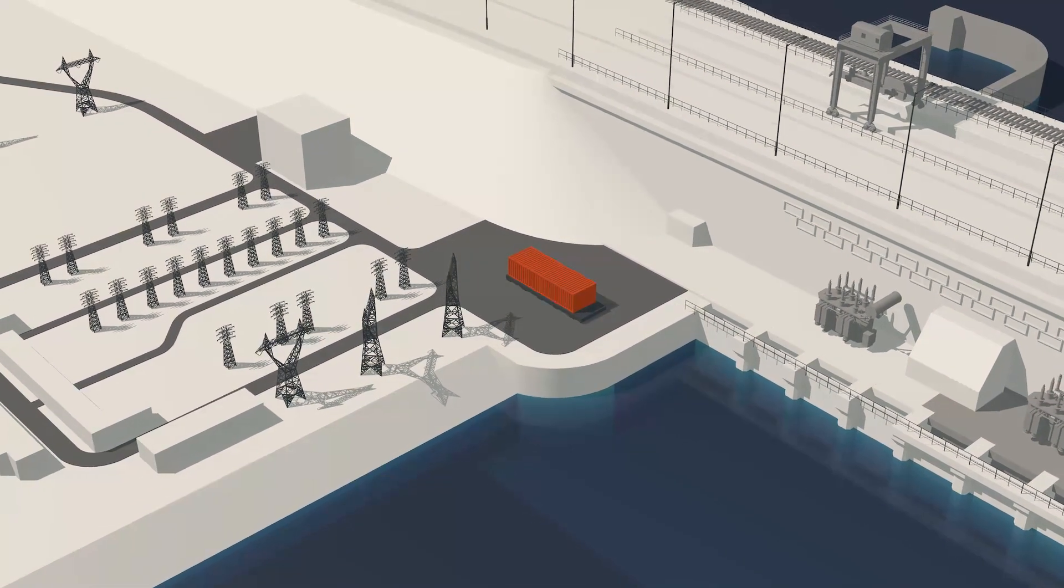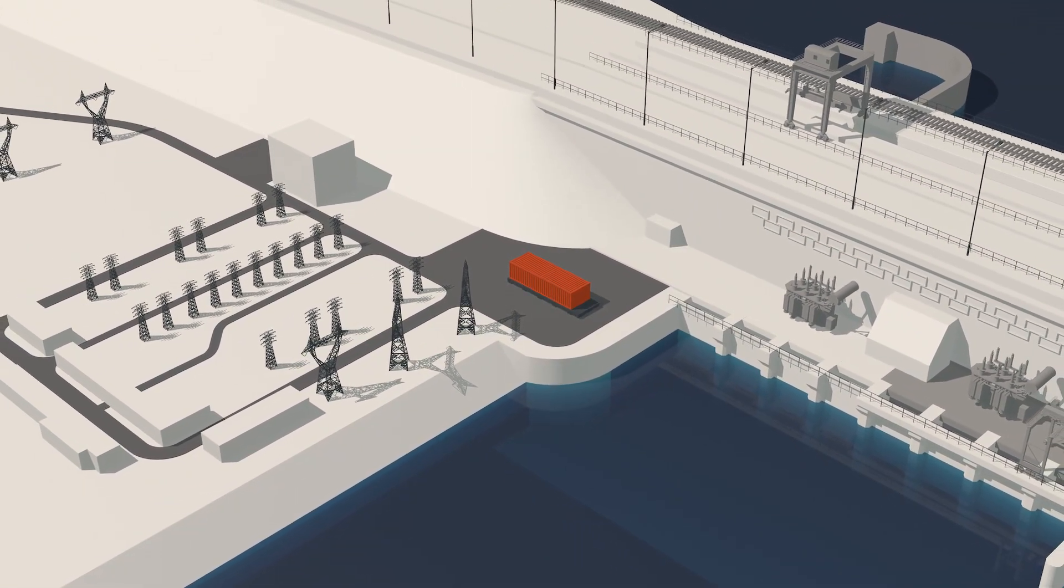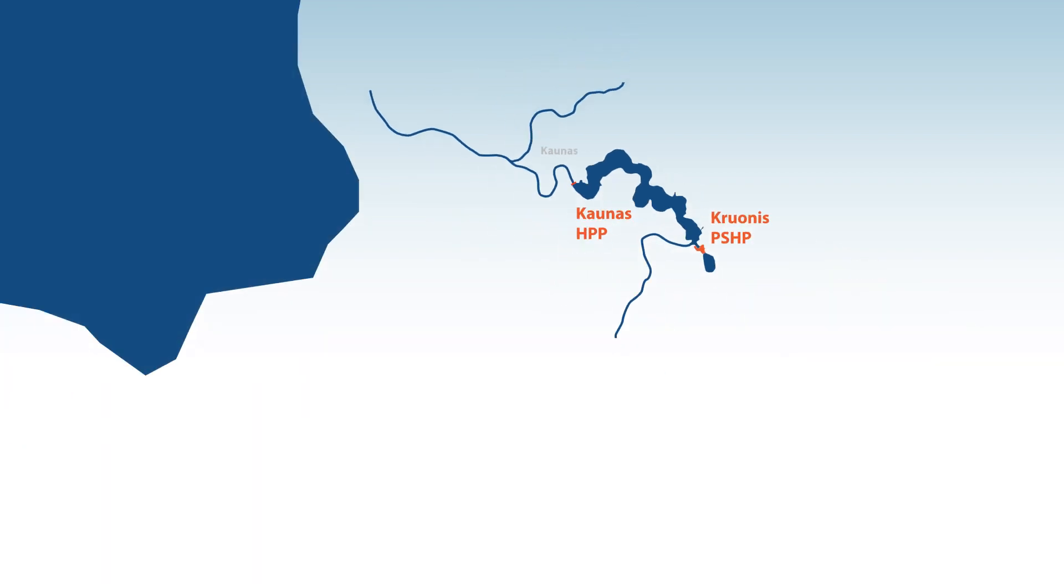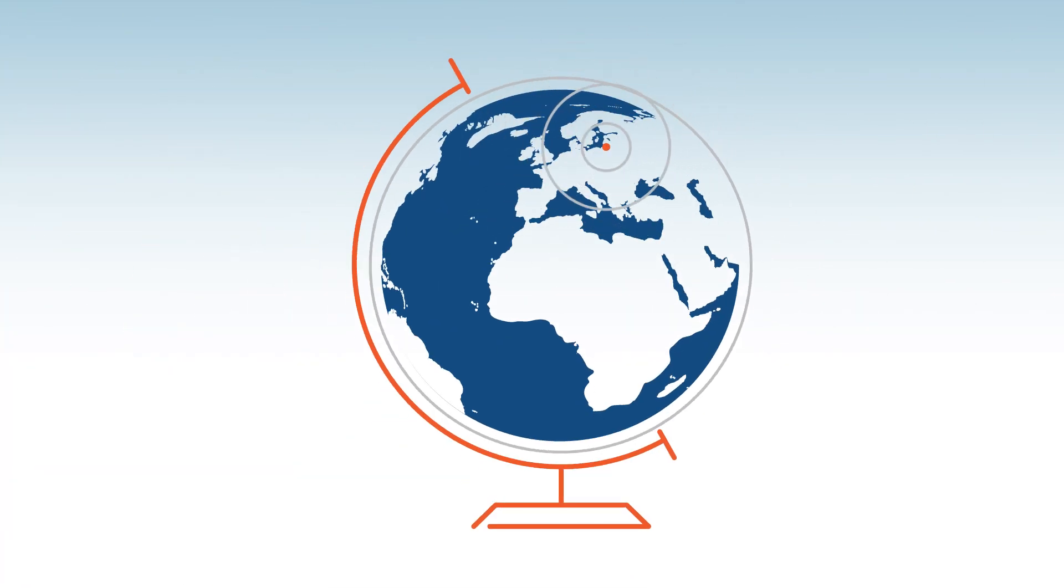If needed, this technology can later also be used for the Kronas Pumped Storage Plant's much larger units. This hydropower and battery storage synergy project would make Lithuania the first among its neighbors to install such an innovation.